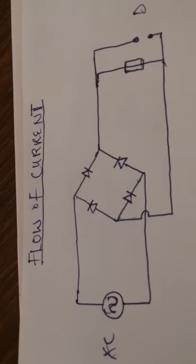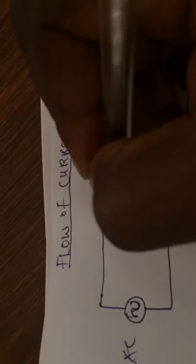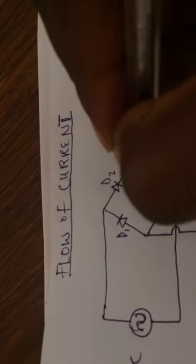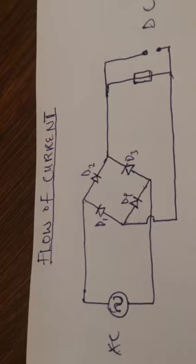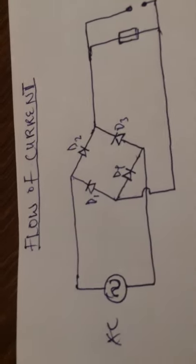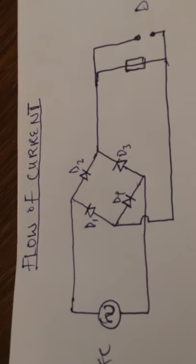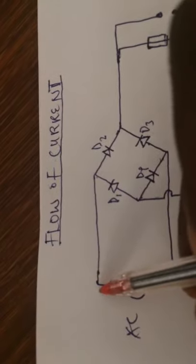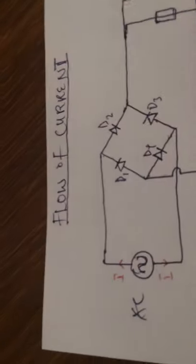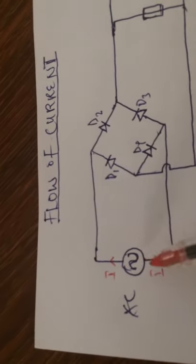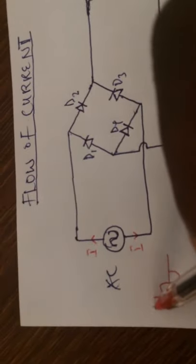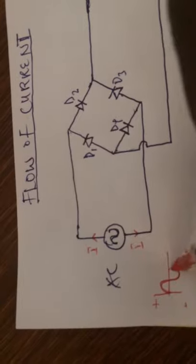Let me label these diodes: D1, D2, D3, and D4. Alternating current is a current that moves repeatedly and alternates — at one half it is positive, and at the other half it is negative. So for one half, current goes up, and for the other half, current comes down. That is why we have this waveform representing alternating current — it has a positive side and a negative side.